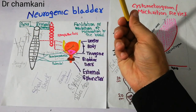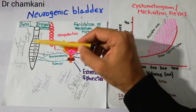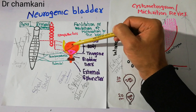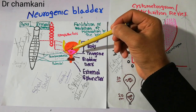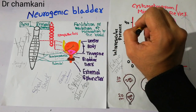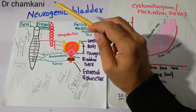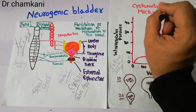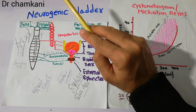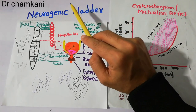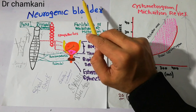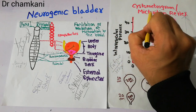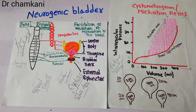When the inhibitory signals — the signals trying to stop the micturition reflex — are lacking, this condition leads to neurogenic bladder or uninhibited neurogenic bladder: a condition in which even a small amount of urine in the bladder can start the micturition reflex. That's all about neurogenic bladder. Thanks for watching.